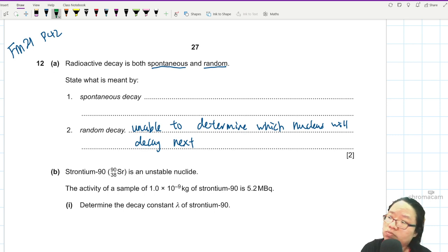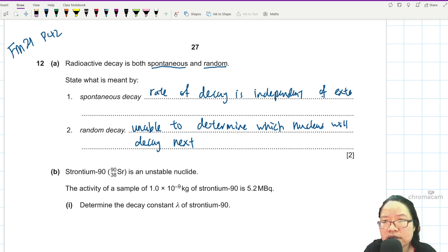Spontaneous means I don't know, I can't make it happen even if I want to. It's spontaneous. So the rate of decay is independent of external factors. Independent of the external environmental factors, such as temperature and heat and pressure. All that, don't care.